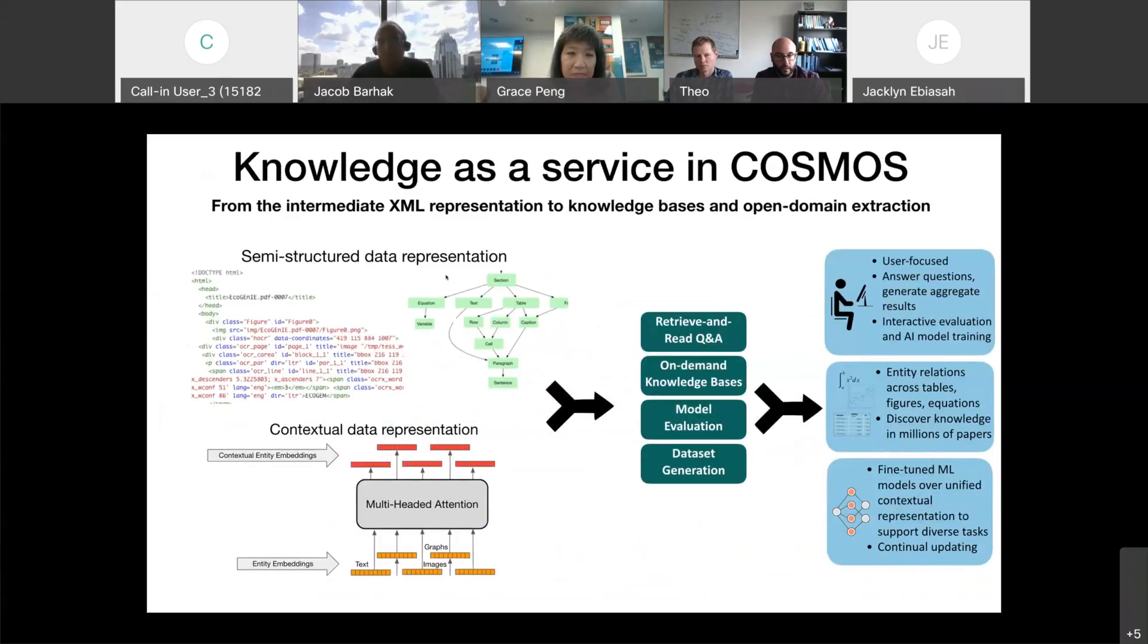For instance, we can do entity recognition or we can do extraction of tables and conversion of tables to data frames. But we also have this other type of representation that tries to find a single unified representation of entities of interest that aggregates information for different scientific entities coming from text, images and graphs. For that, we rely on state-of-the-art technologies such as the transformer networks and specifically multi-headed attention networks that basically fuse these different contexts, these different references to these entities into a single unified representation.